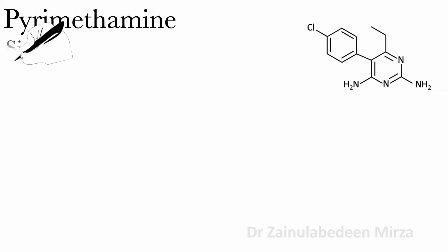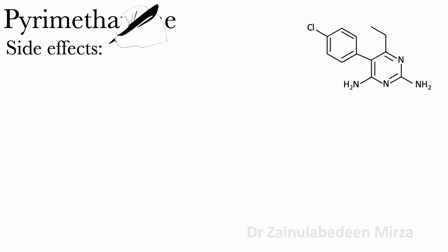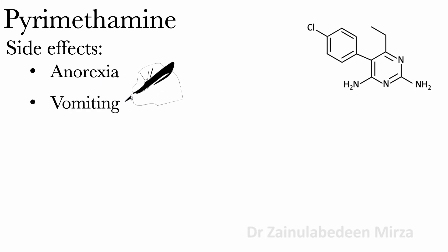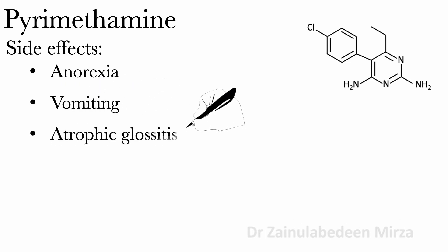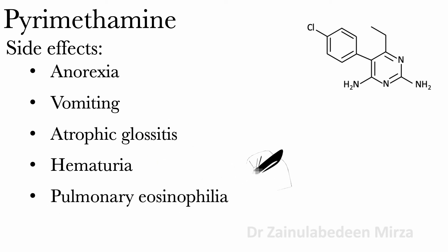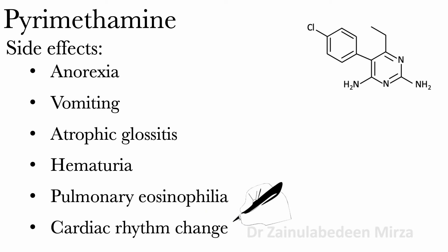Side effects of pyrimethamine are anorexia, vomiting, atrophic glossitis, and other antiprotozoal effects. Pulmonary eosinophilia and cardiac rhythm changes are also noted side effects.